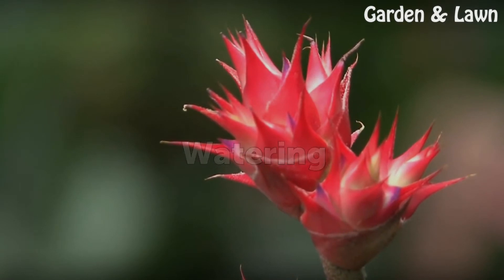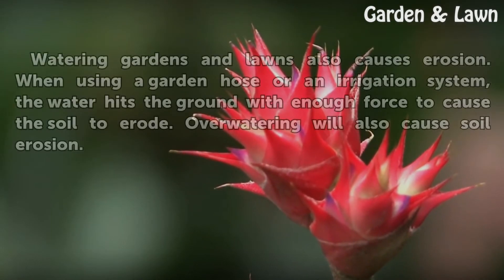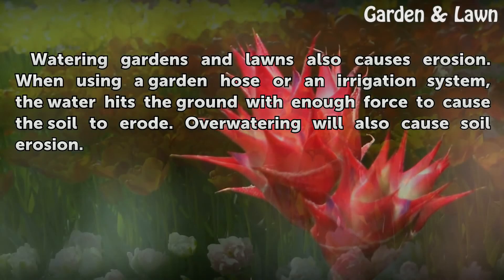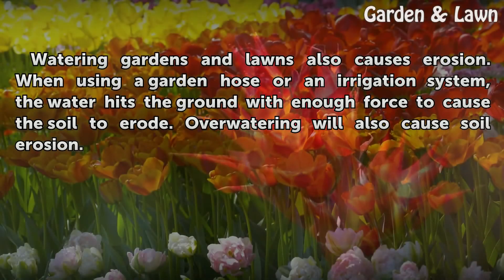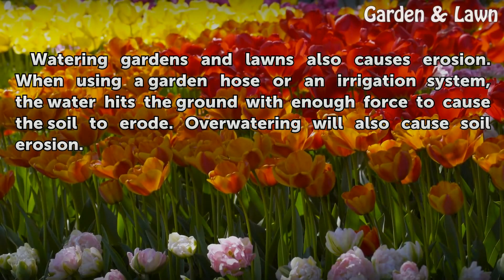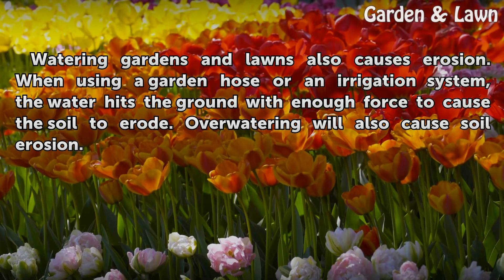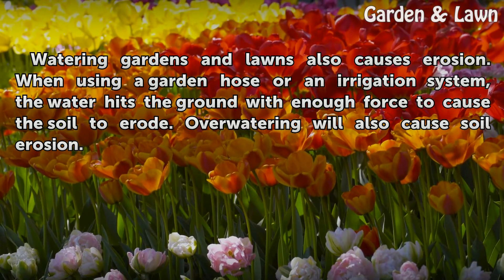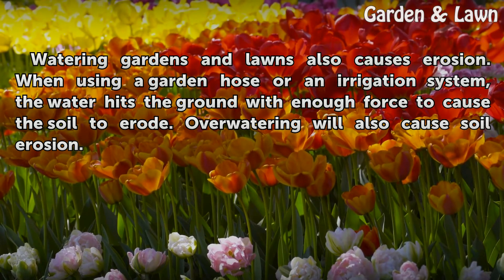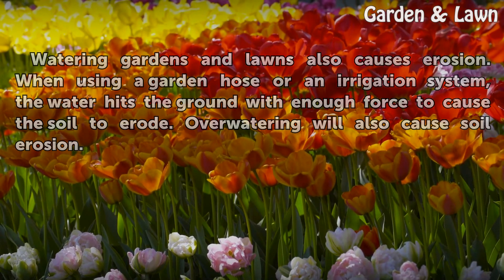Watering gardens and lawns also causes erosion. When using a garden hose or an irrigation system, the water hits the ground with enough force to cause the soil to erode. Overwatering will also cause soil erosion.